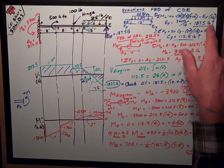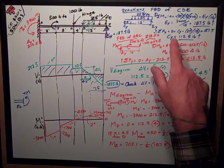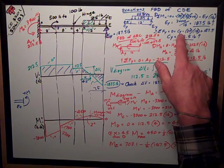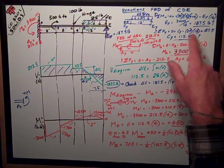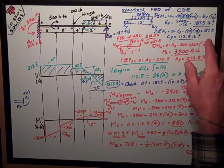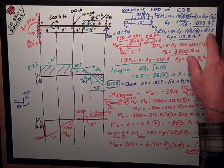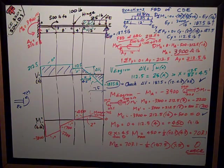Sum of forces in the Y direction gives me the reaction at C in the Y direction. It's just 25 times 12, external applied distributed load force plus my reaction at EY. CY works out to be 112.5 pounds.